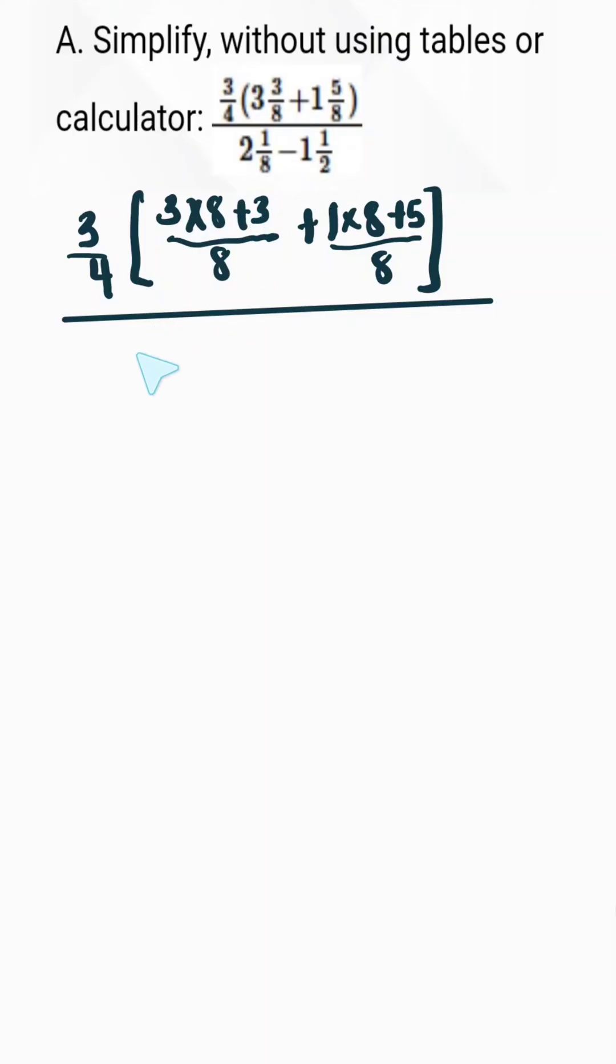For the denominator, we're going to use the same method here. We have 2 multiplied by 8 plus 1 divided by 8 minus 1 multiplied by 2 plus 1 divided by 2.